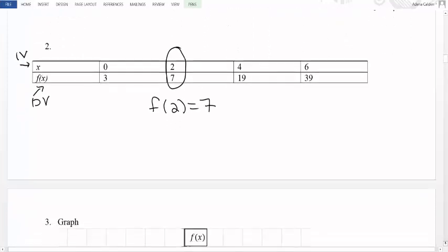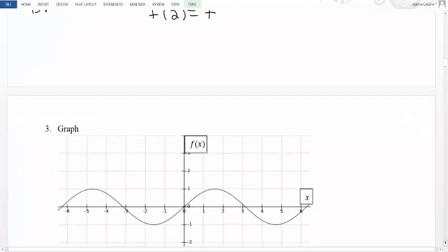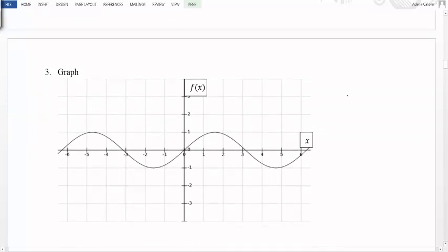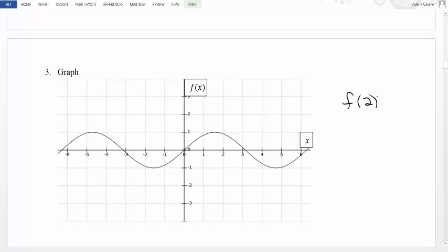Looking at our next form, we can consider a graph. If we're interested in f(2), that means we have to go to where the independent variable equals 2. When you have a graph, the independent variable shows up on the horizontal axis, so that's the one that goes from left to right. Your dependent value is in the vertical axis, going up and down. If we're interested in what's happening at 2, we go up to the graph at 2, and we look at the corresponding y value.